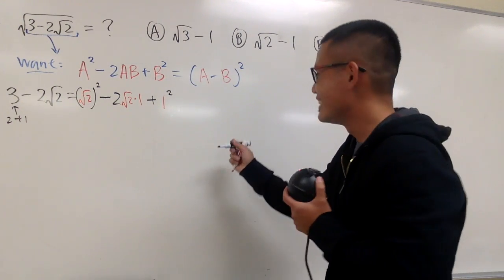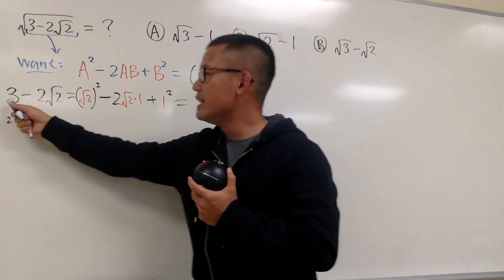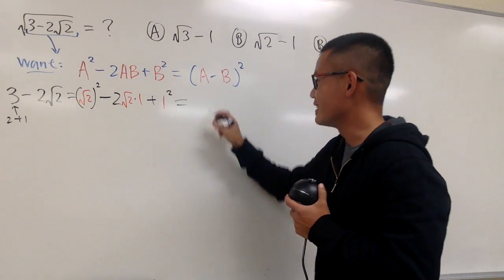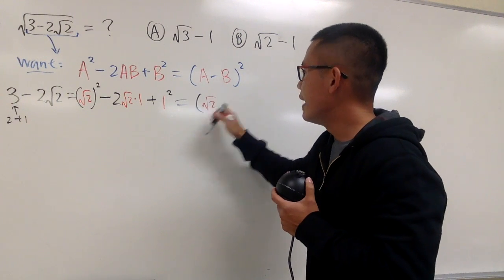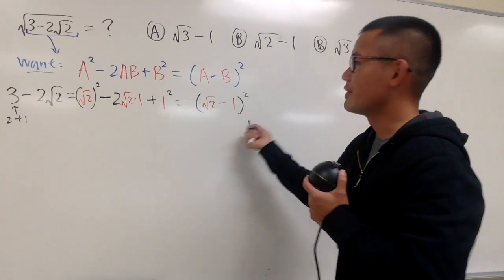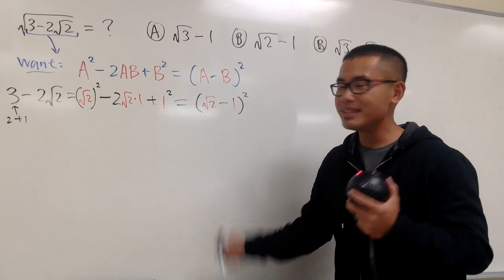So in another word, this is secretly a perfect square. What is it? Well, a is √2, and then minus b which is 1, and then we have that square. That's it. So, now let me do this for you guys.